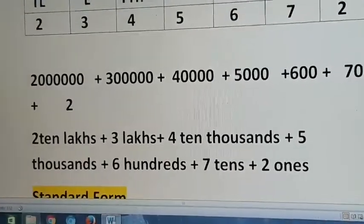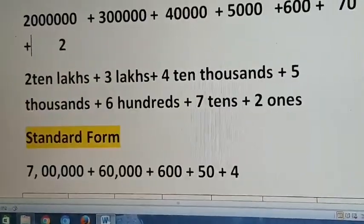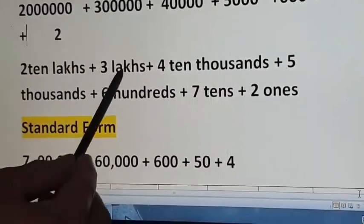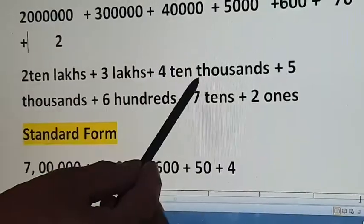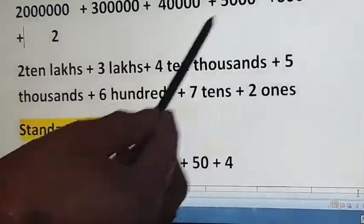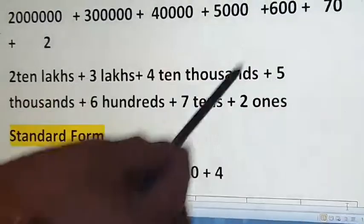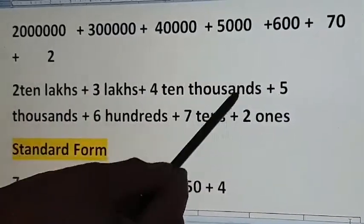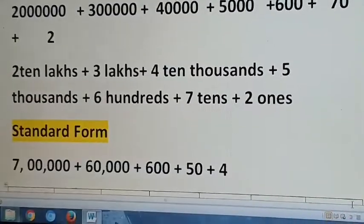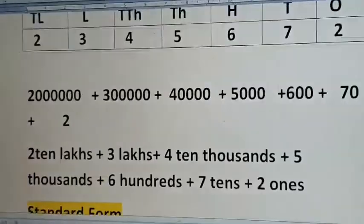This one is also the same but it is in words. So it is: 2 ten-lakhs plus 3 lakhs plus 4 ten-thousands plus 5,000 plus 600 plus 7 tens plus 2 ones. This is the same — it is in words. So it is clear: expanded form means write the place value and add.